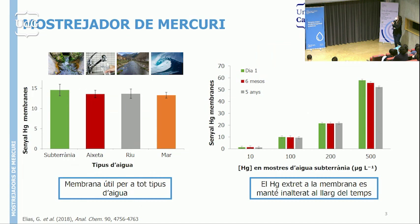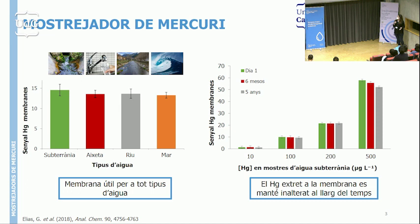El primer cas que us presentaré és el mostrejador de mercuri. Es van utilitzar diferents matrius d'aigua: concretament aigua subterrània, aigua de l'aixeta, aigua del riu i també aigua del mar. Tenim diferents tipus de matrius dopades amb una concentració baixa de mercuri. Un cop fets els experiments, es va analitzar la membrana i es va veure que obteníem el mateix senyal de mercuri, cosa que ens va permetre comprovar que aquest seria un mostrejador tipus universal ja que ens serviria per als diferents tipus de matrius d'aigua.